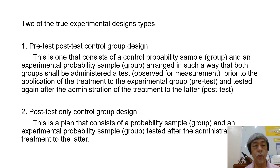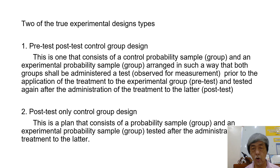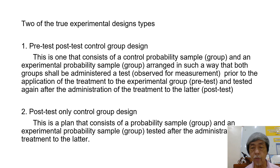Let us consider two of the true experimental design types. The first is the pre-test post-test control group design. This consists of a control probability sample or group and an experimental probability sample or group, arranged such that both groups shall be administered a test prior to the application of the treatment — we call that the pre-test — and tested again after the administration of the treatment to the experimental group, which we call the post-test. The second is the post-test only control group design.